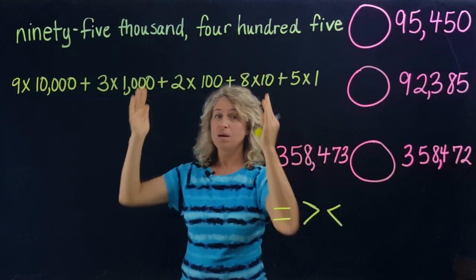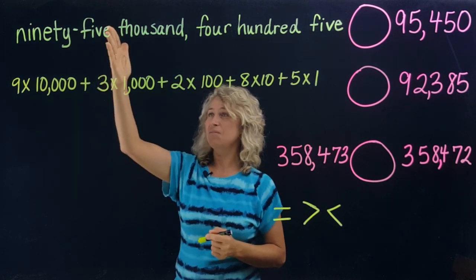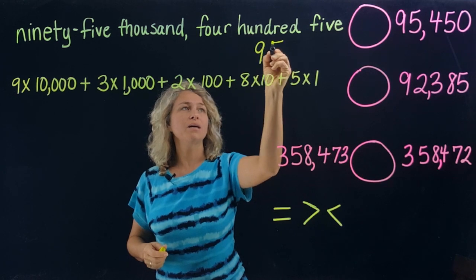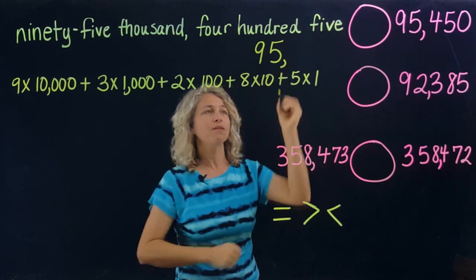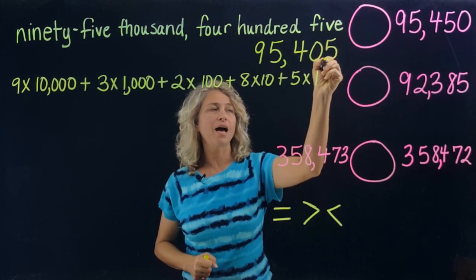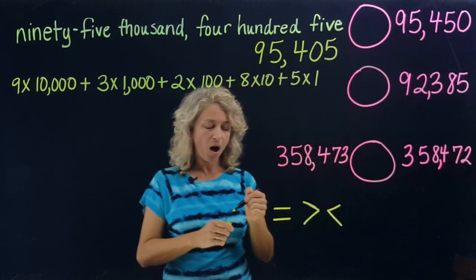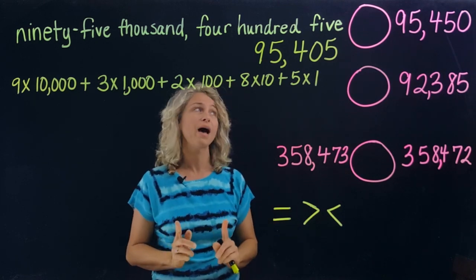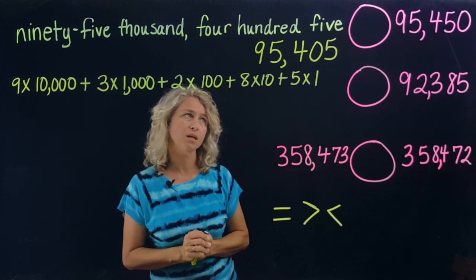Let's look at the first one: ninety-five thousand four hundred five. If you can take the standard form and write it in word form, you should be able to do it backwards too. So let's write ninety-five thousand four hundred five. Now we can compare this number to this number. Always when comparing digits, start with the greatest value.